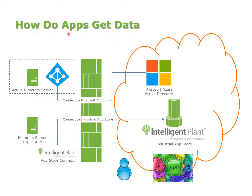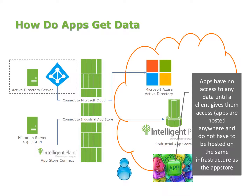So now that we've done all that, how do apps get data? Apps can be made by Intelligent Plant or by any other vendor, and we do encourage any vendor to put apps in the App Store — we're looking to encourage competition and drive innovation. When someone connects to the cloud, they're not actually allowing every app to access their data. In fact, they have allowed no apps to access their data at the point they connect to the Intelligent Plant App Store. Apps can be hosted anywhere and do not have to be hosted in the same infrastructure as the App Store — they can be hosted elsewhere in the cloud or within someone else's own network, as long as it's accessible from the internet.